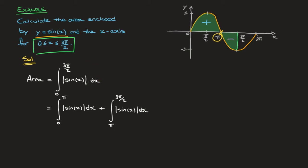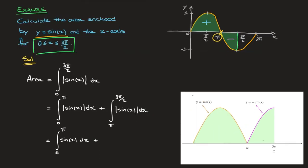Now that we've split the integral into two, we take care of the absolute values. For the first integral from 0 to pi, sine of x is above the x-axis — it's positive — so the absolute values do nothing and we can write it as the integral from 0 to pi of sine of x. For the second integral from pi to 3 pi over 2, sine of x is underneath the x-axis — it's negative — so the absolute value turns sine of x into negative sine of x. We rewrite the second integral as the integral from pi to 3 pi over 2 of negative sine of x.